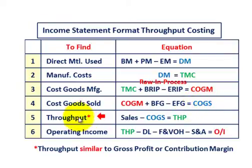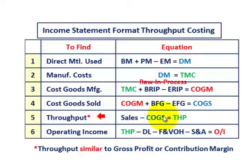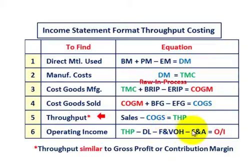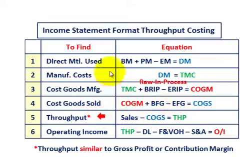Step 5 is the throughput — this is what's distinct about throughput costing. Throughput dollars equal total sales dollars less cost of goods sold. This is similar to gross profit or gross margin in other costing methods, but referred to as throughput here. Step 6: operating income equals throughput dollars less direct labor, less variable and fixed factory overhead, less all selling and administrative expenses.